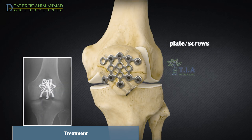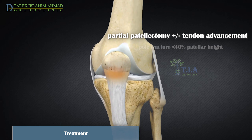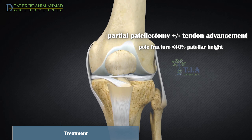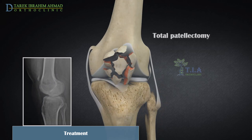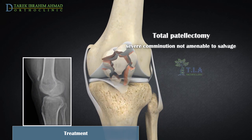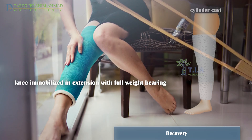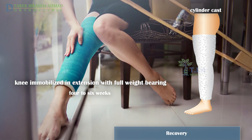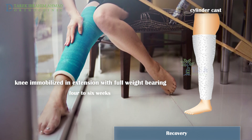Another approach to a transverse fracture is to secure the bones using small screws, or small screws and small plates. When the bone fragments at the ends of the patella are too small to be fixed back into place, the doctor will remove them and reattach the loose patellar tendon to the remaining patellar bone. Complete removal of the kneecap is a last resort in treating a comminuted fracture. Post-surgery, the knee will be immobilized with a cylinder cast from the groin to the ankle with the knee in extension and full weight bearing for four to six weeks.